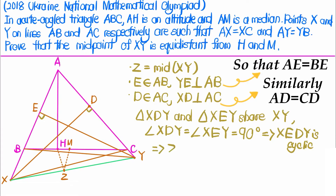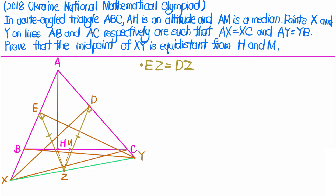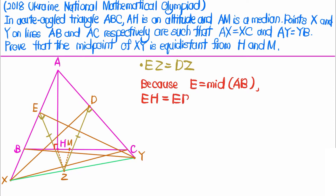Z is the circumcenter of the cyclic quadrilateral XEDY, so ZX equals ZY equals ZE equals ZD — they are all the same length. We also know that angle AHB is 90 degrees since AH is an altitude, and since E is the midpoint of AB, we have EH equals EB equals EA, which is half the length of AB. Equivalently, E is the circumcenter of triangle ABH.